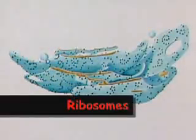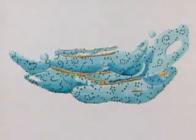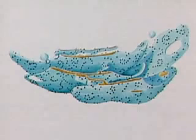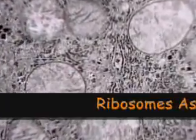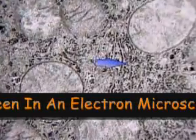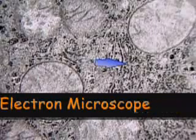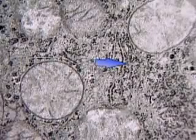Ribosomes are the most numerous structures in the cell and may or may not be attached to the rough endoplasmic reticulum. Ribosomes, which are composed of RNA and proteins, are the primary site of protein synthesis. Since all living things rely on proteins for cell maintenance and growth, it is easy to understand why ribosomes are so abundant.